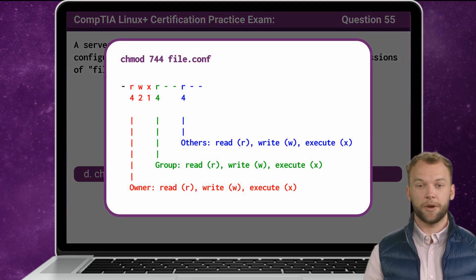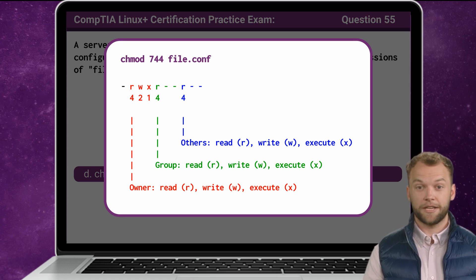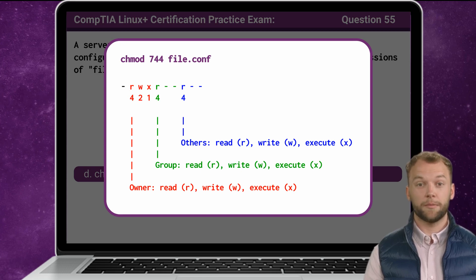In detail, the chmod command is utilized to modify the permissions of a file or directory. The numerical representation 744 corresponds to the permissions setting, where the first digit 7 denotes the owner's permissions, the second digit 4 represents the group's permissions, and the third digit 4 signifies the permissions for others. Specifically, the owner is granted read, write, and execute permissions represented as a total of 7, while the group and others are restricted to read-only access.